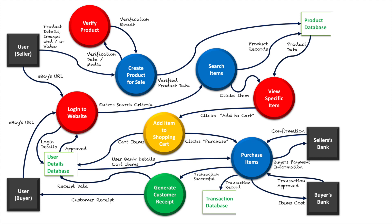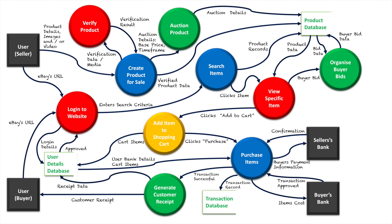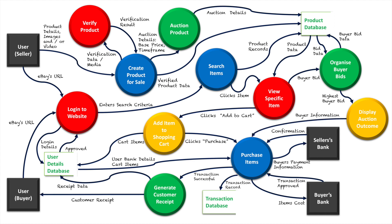The final thing to look at is if they decide to auction a product. Going back to the create product for sale area, a decision is made to auction the product, and auction details are entered — such as the base price and the timeframe for which the product will be available for bidding. Once the auction details are made, they are entered against the product's details in the product database. When buyers view information about this product, they can then make a bid. The system organizes the buyer bids, mapping them against the product database — the buyer's bid is entered, and the system also retrieves bid data from other bidders. When the set auction date arrives, the highest bidder is retrieved and the auction outcome is displayed.